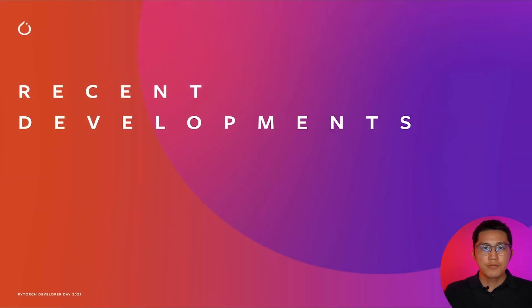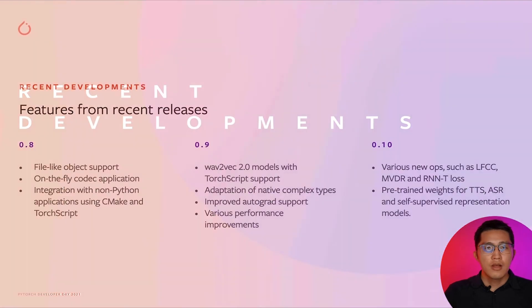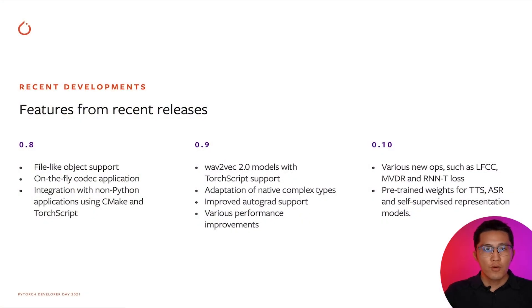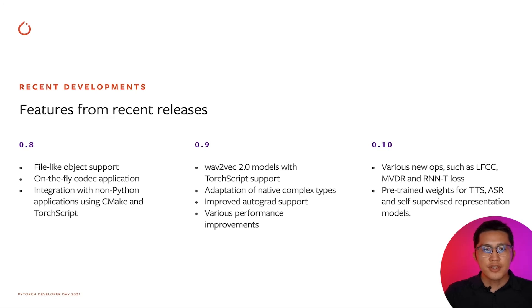Let's look into the recent developments. In version 0.8, we added file-like object support to IO functions. This allows on-the-fly codec application. We also adopted CMake in the build process so that TorchScript operations can be used in non-Python environments. In version 0.9, we added the popular Wav2Vec2 model with TorchScript support.